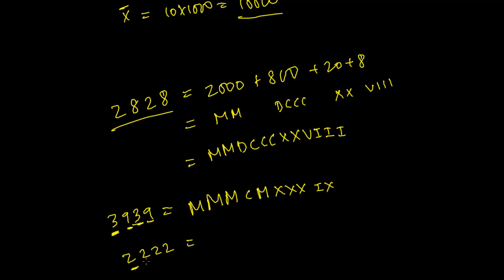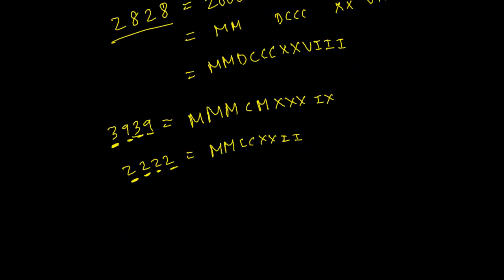Now let's write 2222. The first 2 represents 2000, so we write MM. The second 2 represents 200, so we write CC. The third 2 represents 20 tens, so we write XX. The last 2 represents two ones, so we write II. Combined: MMCCXXII.